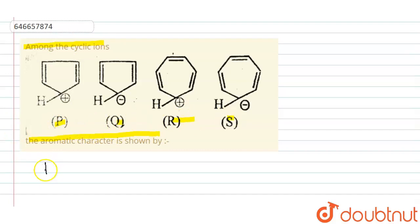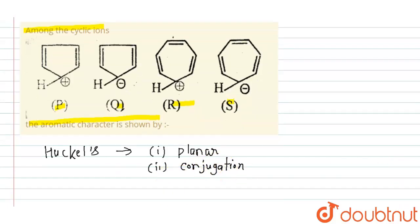Now according to Huckel's rule, three conditions must be satisfied. First, compound must be planar. Second, it must show conjugation. And third and most important, it must have 4n plus 2 pi electrons.